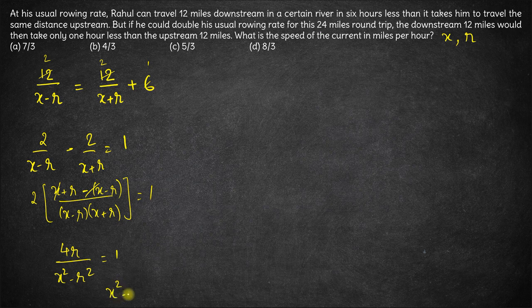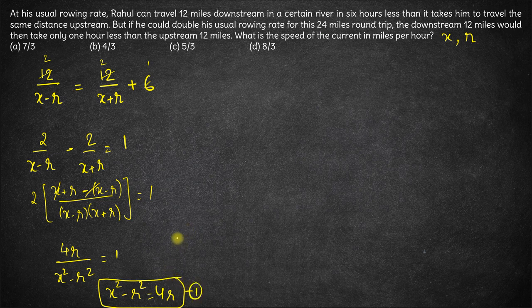So effectively we have x square minus r square is equal to 4r. This is the first equation.